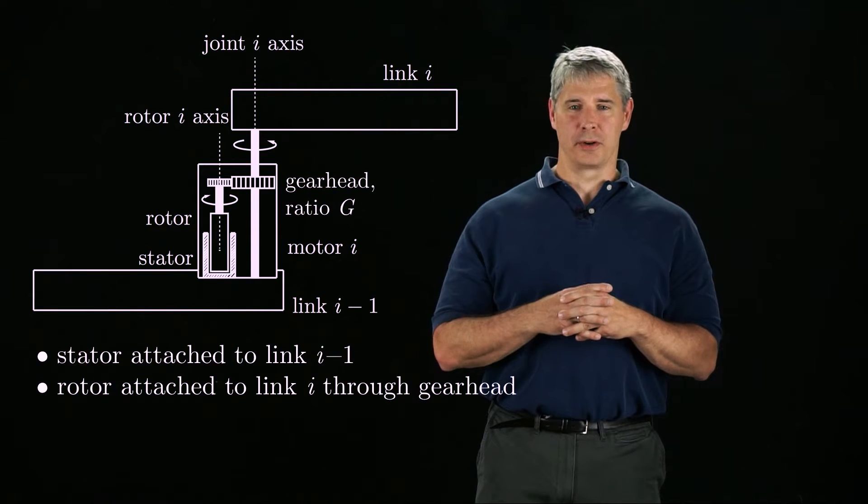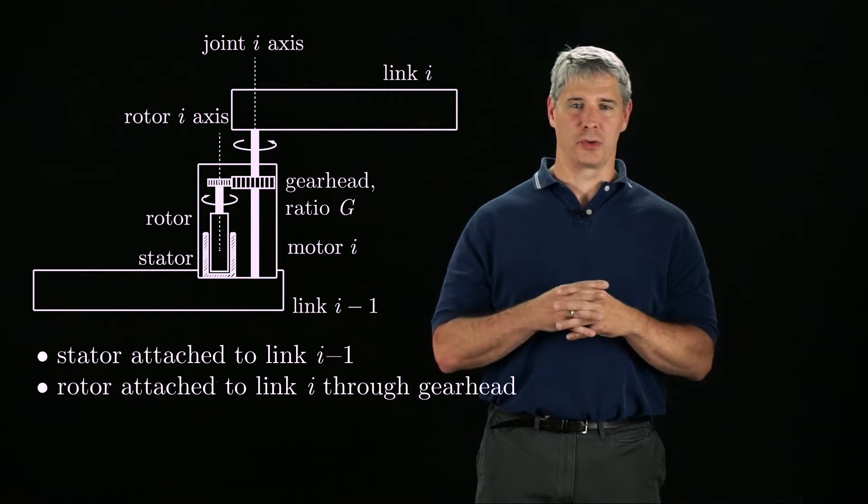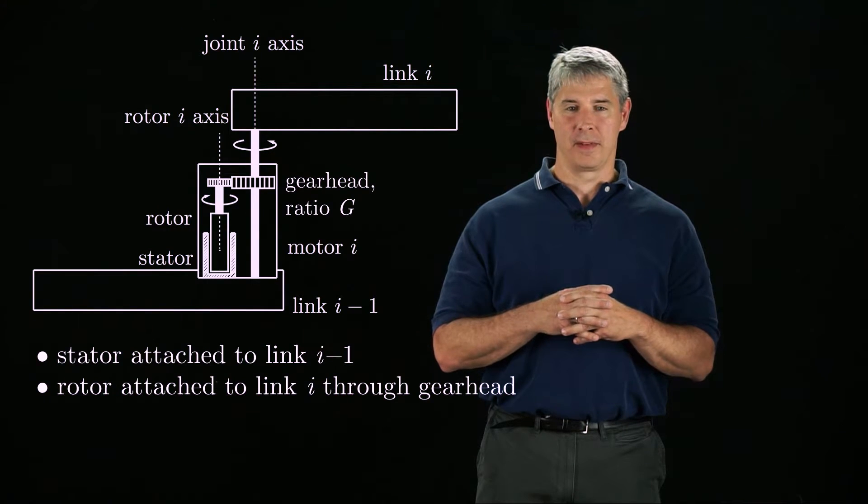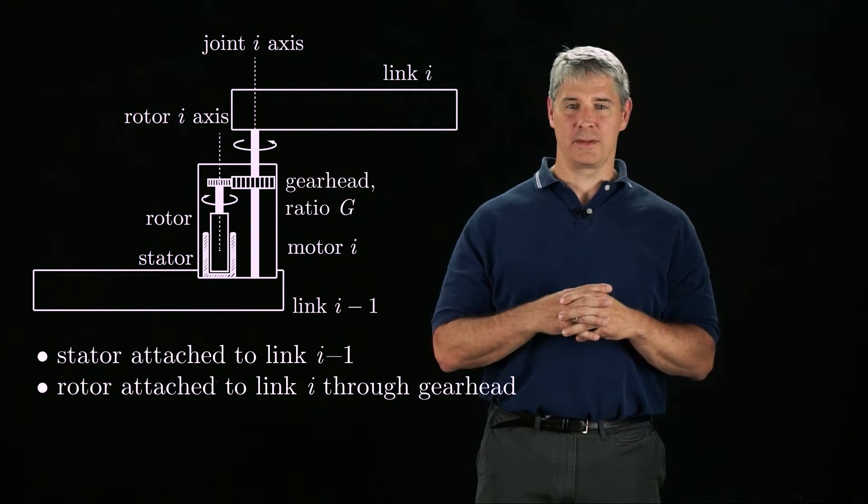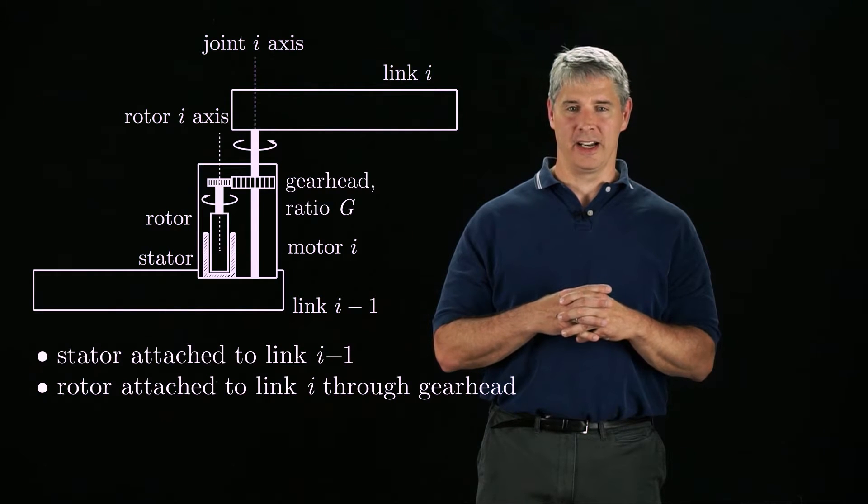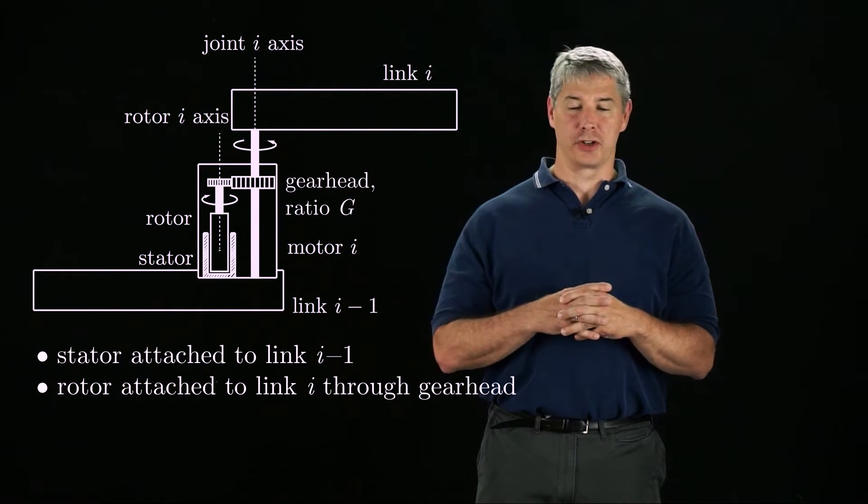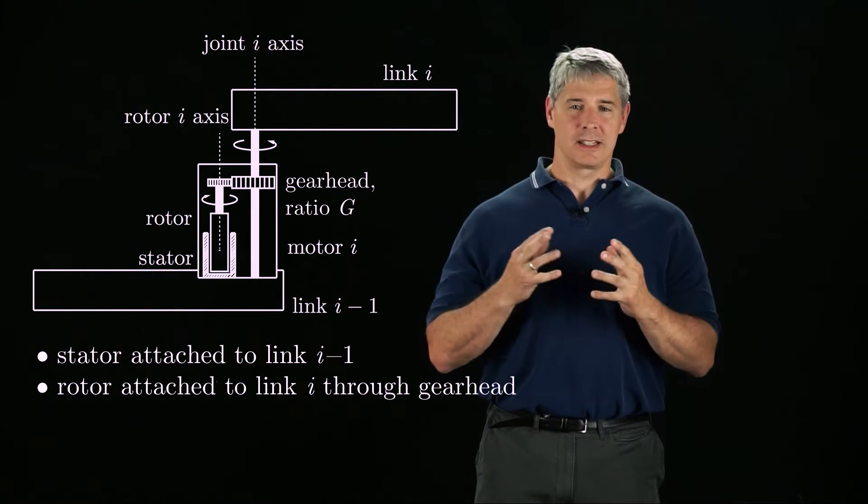Typically the mass and inertia of a motor's rotor is much less than the mass and inertia of link i, so it's tempting to ignore the rotor's mass and inertia. But the rotor spins G times faster than link i because of the gear head, so the effect of the motor's inertia could be significant.